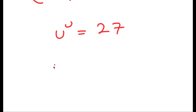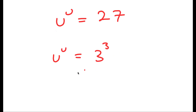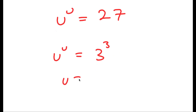So if u to the power of u is equal to 27, and 27 is the same thing as 3 to the power of 3, meaning u is equal to 3.